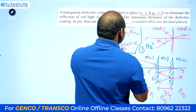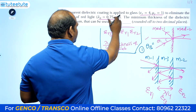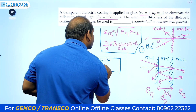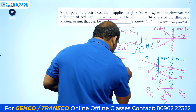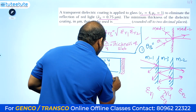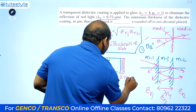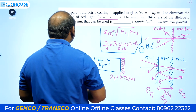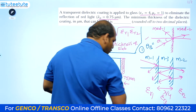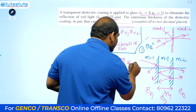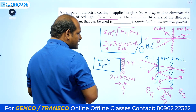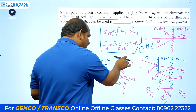Applying this knowledge to the problem: the transparent dielectric coating is applied to glass having εr = 4 and μr = 1. Air is medium 1, the dielectric coating is medium 3, and the glass is medium 2. The wavelength is λ₀ = 0.75 micrometers. The minimum thickness is λ/4, so our job is to calculate λ/4. We don't know the properties of the coating yet, but we need to calculate lambda by 4.